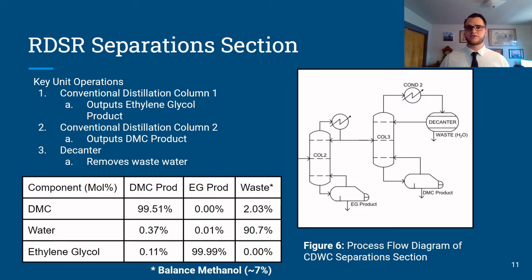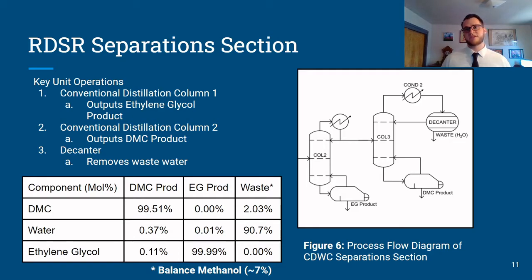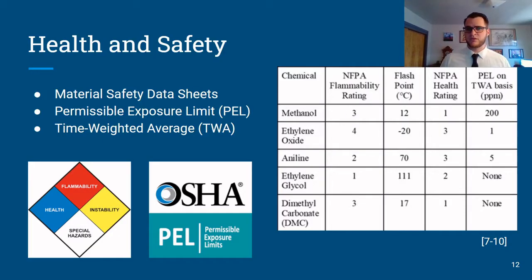The bottoms of the reactive distillation column are further purified downstream using a series of conventional distillation columns and a decanter drum. Column 2 separates ethylene glycol at 99.99 mole percent purity in its bottom stream, with the top stream fed into Column 3, which separates DMC at 99.5 mole percent purity. The top stream from Column 3 is fed into a decanter drum, from which a wastewater stream is drawn — comprised of 91% water, 2% DMC, and 7% methanol — which is sent to a wastewater treatment plant. The top stream from the decanter drum is fed back into Column 3, essentially acting as a reflux.